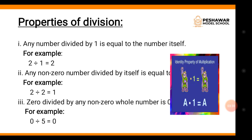We have some properties for division بھی۔ Property number one: any number divided by one is equal to the number itself. جب بھی ہم کسی number کو one پہ divide کریں تو result وہی number واپس آئے گا۔ Example: two divided by one — اس کا answer two ہے۔